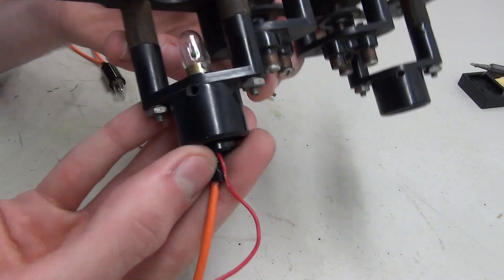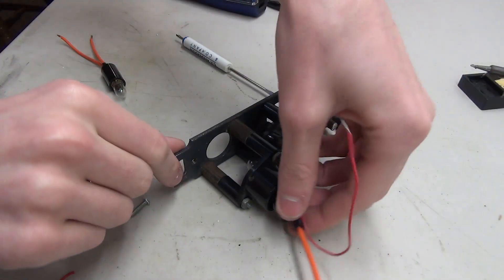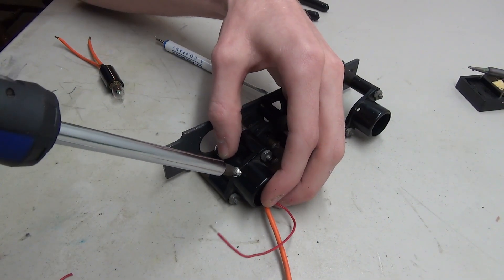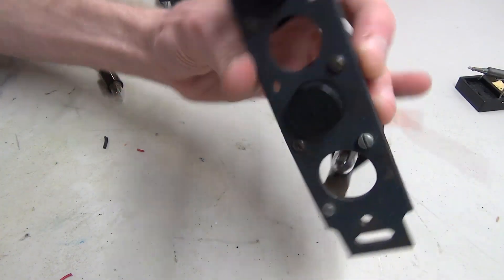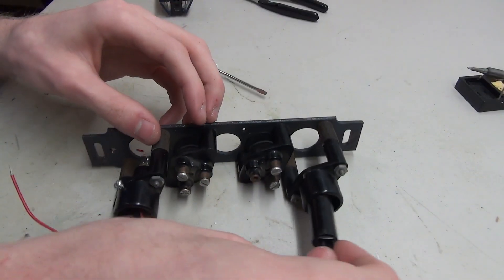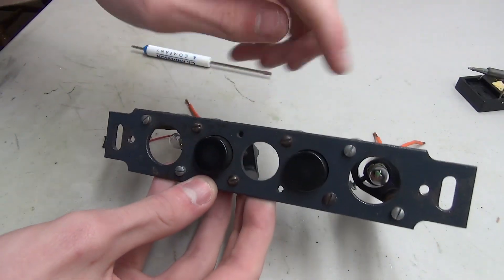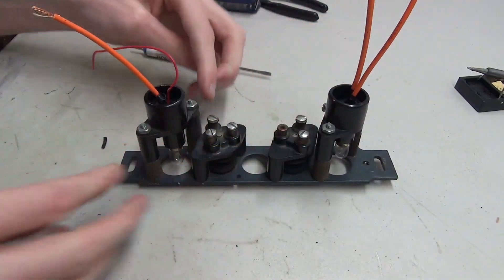All right, so both of the bulbs are now mounted into the back here. Next thing we need to do is wire it all together.